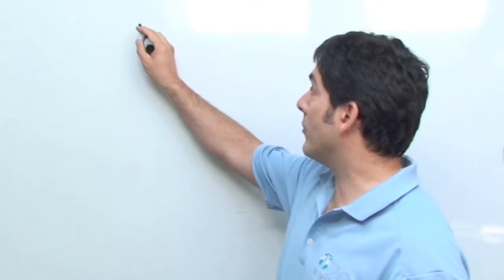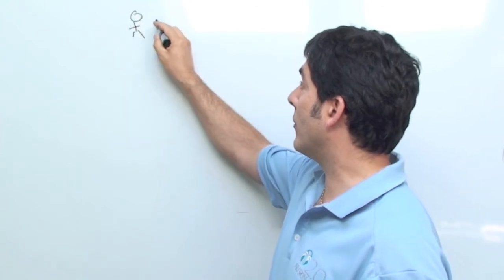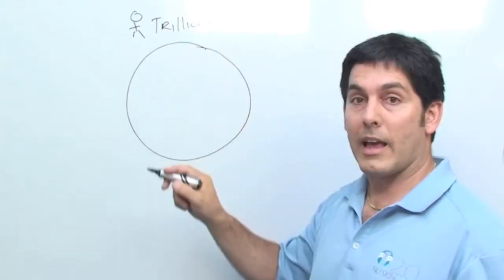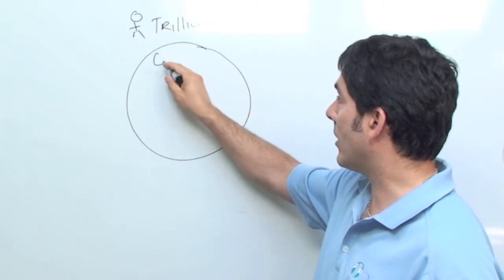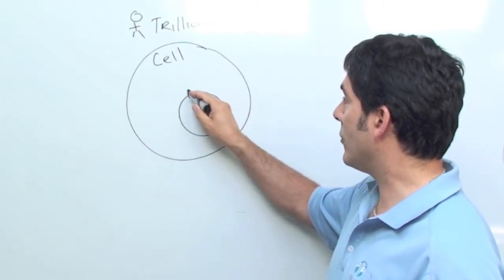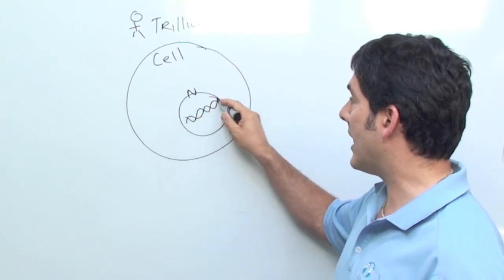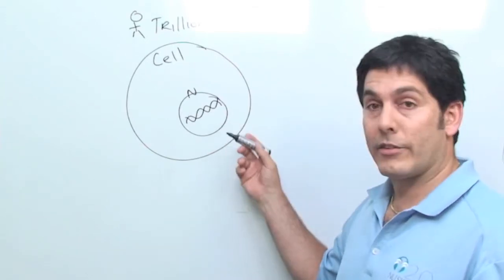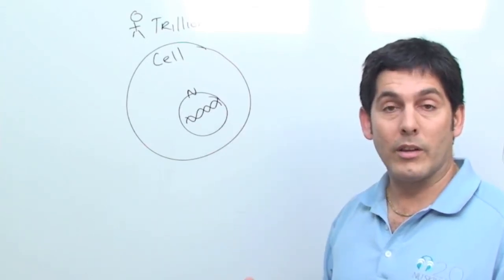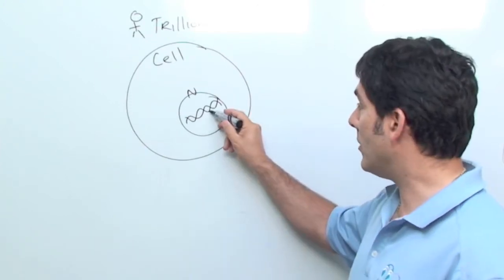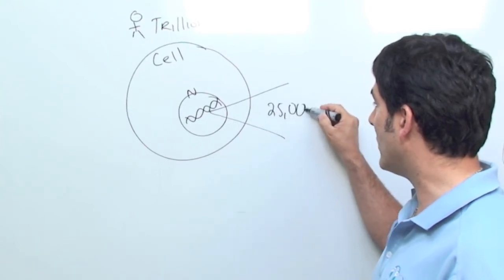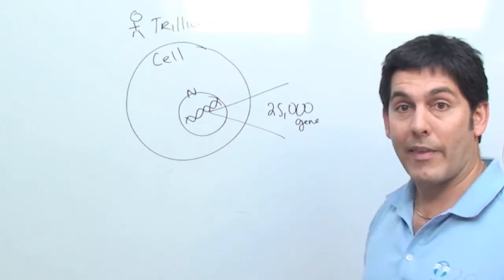So first, let's start with the human cell. Your body is made up of literally trillions of cells, and those cells look something like this. And inside that cell, you have, this is a cell, your nucleus, and inside your nucleus, it holds your DNA. And the DNA is literally the blueprint of you and I.